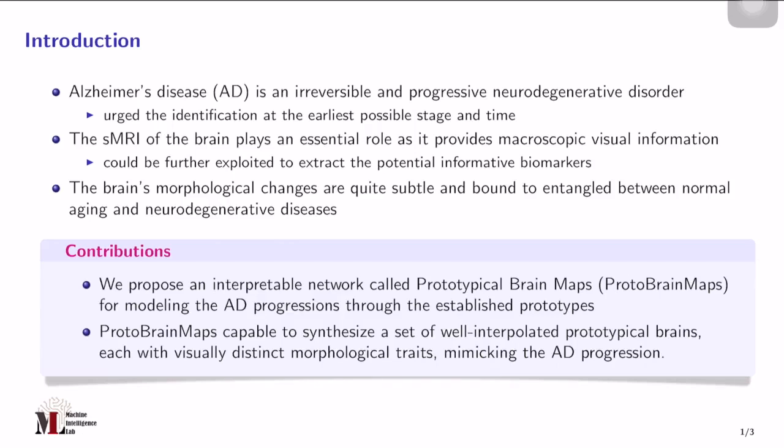Thus, in this preliminary study, we propose an interpretable network called Prototypical Brain Maps or Proto Brain Maps for modeling the AD progression through established prototypes. Through the framework, a set of prototypical brains could be generated, each with visually distinct morphological traits.